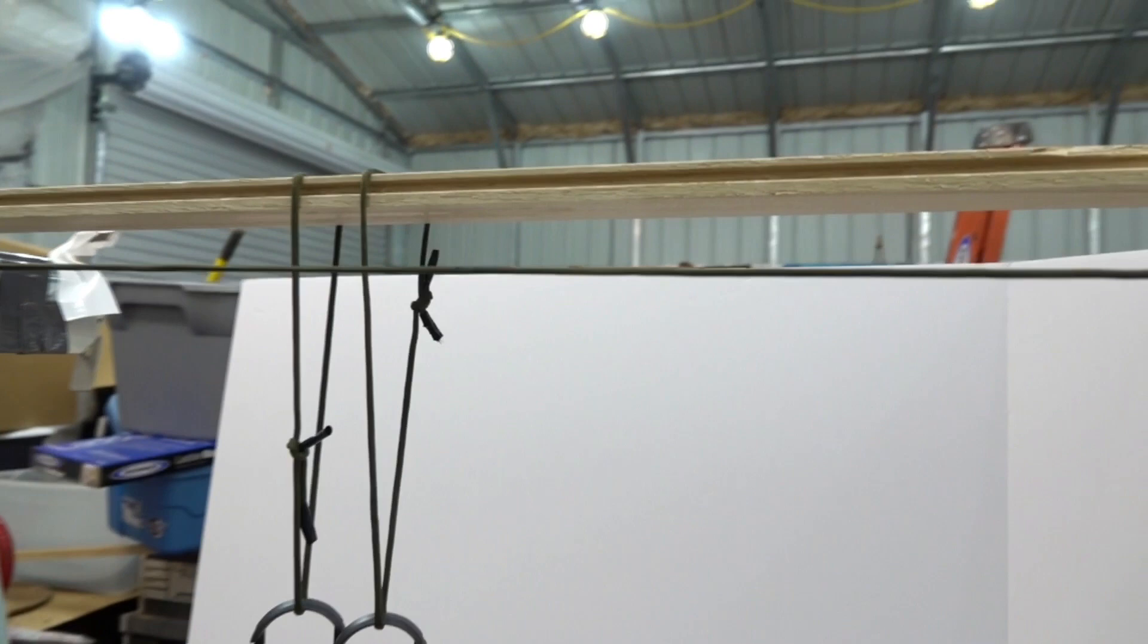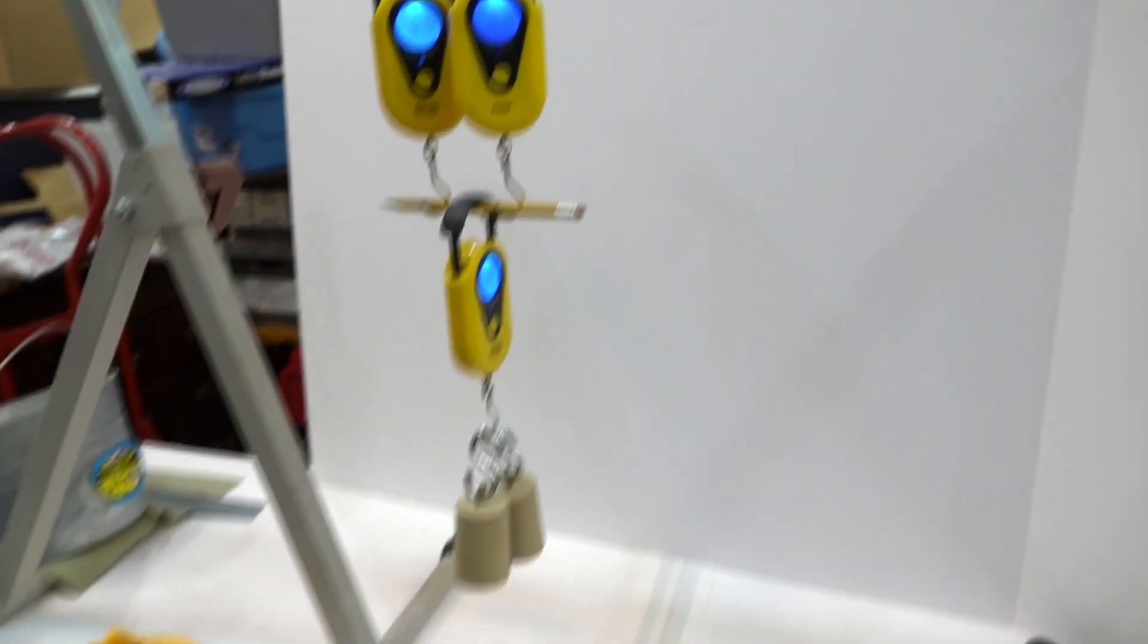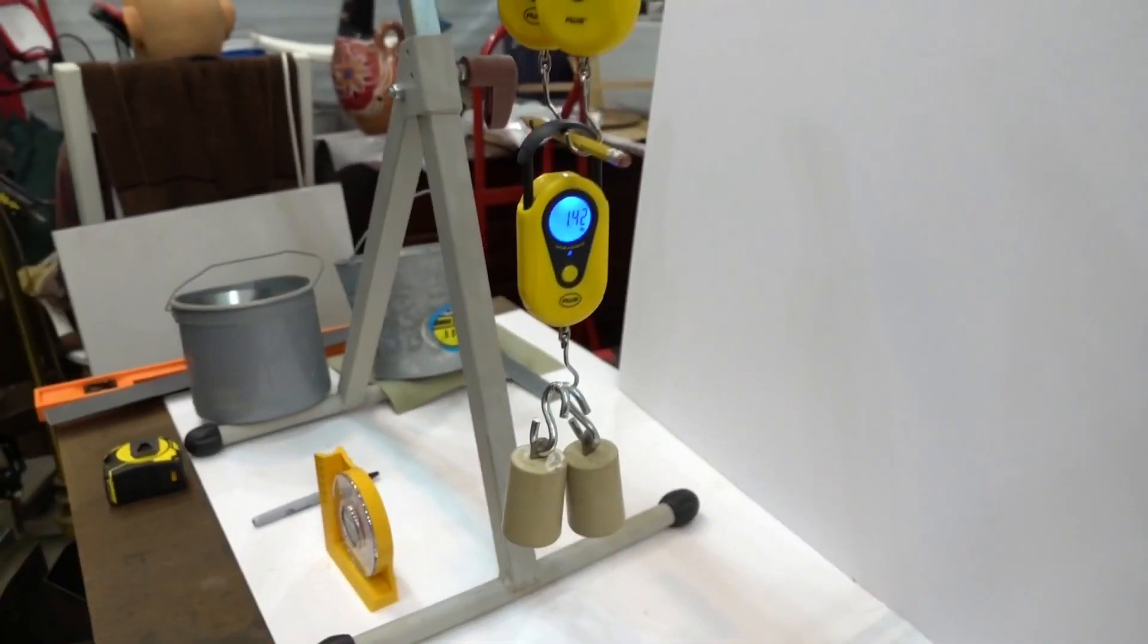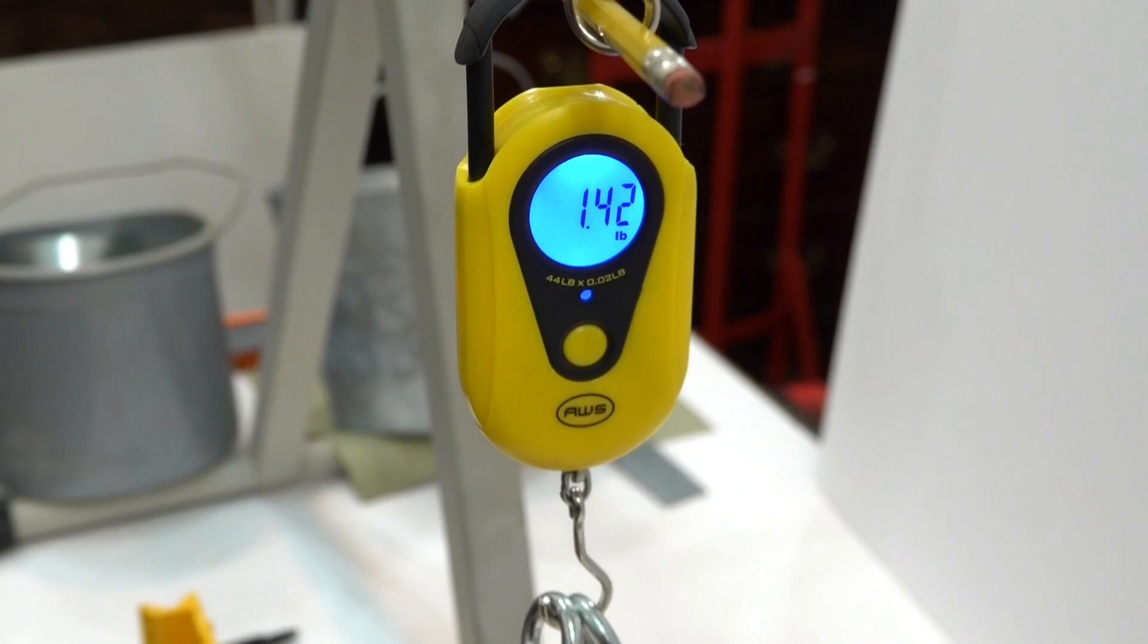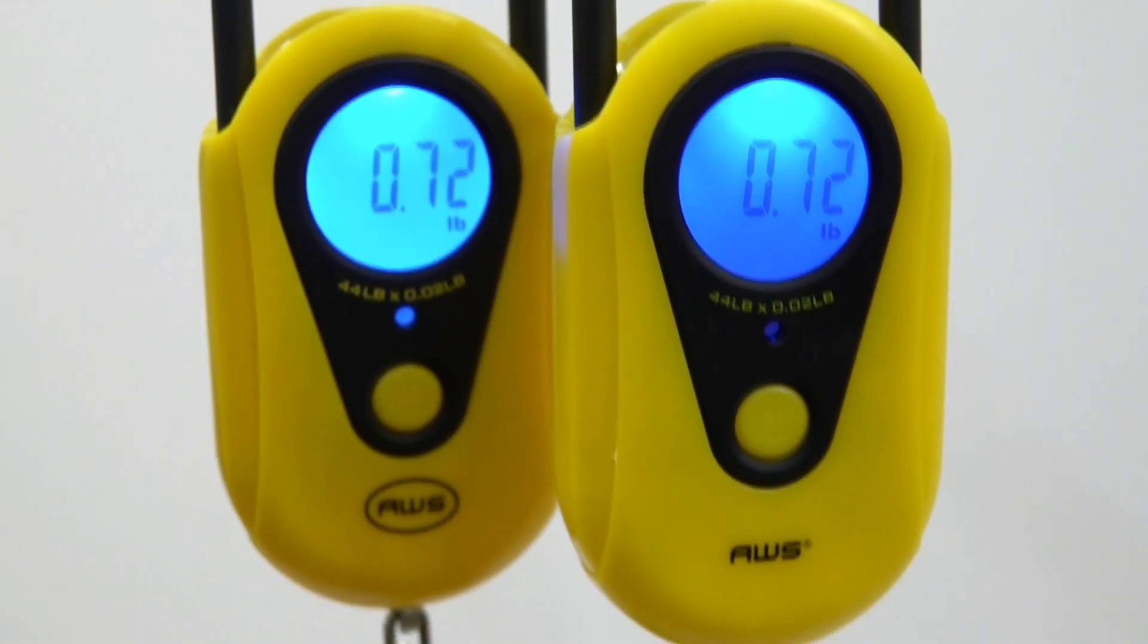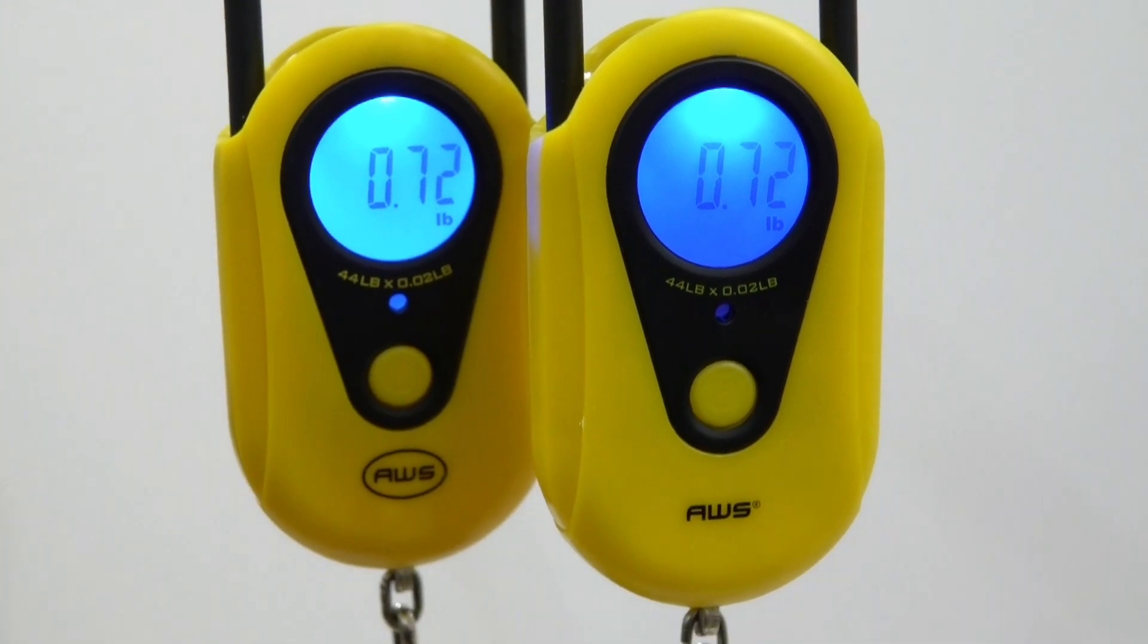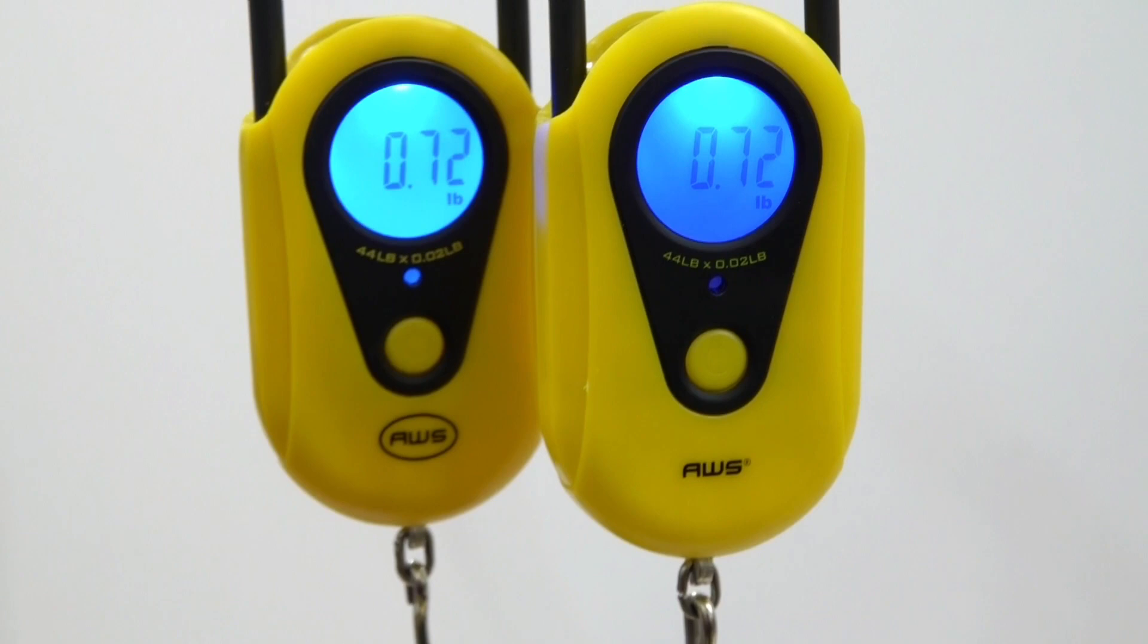Okay, here we've got no mechanical advantage. The angle up here is just 90 degrees. And we just have a weight suspended on the bottom. Same amount of weight. We're reading, let's see here, 1.42 pounds. These two are both reading 0.72. It should be 0.71, but due to the plus or minus 0.02 pounds accuracy, I think we'll live with that.